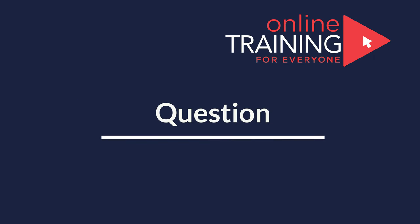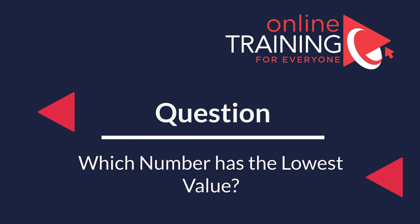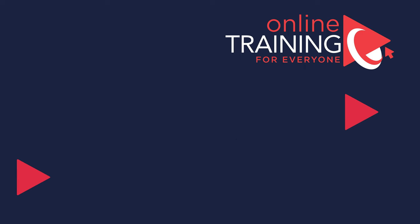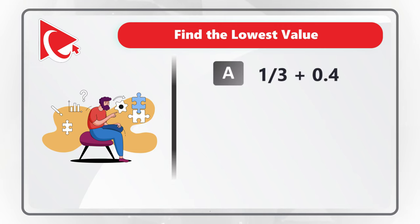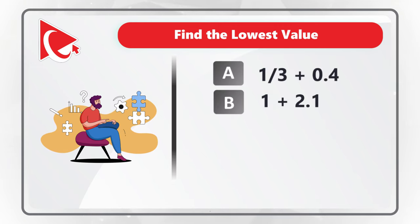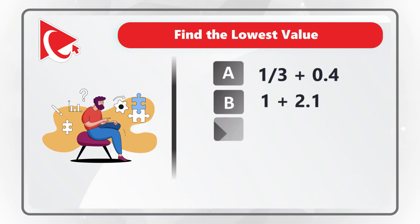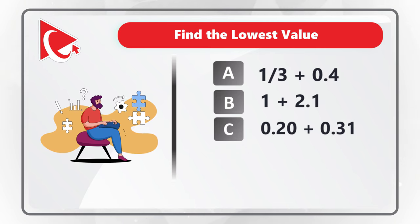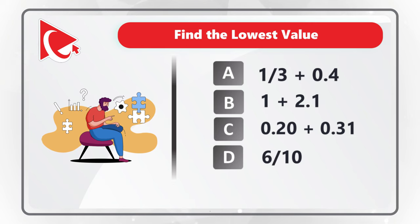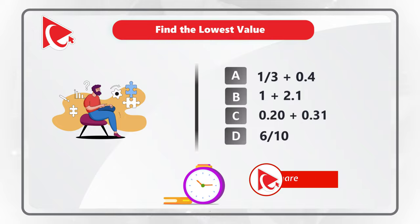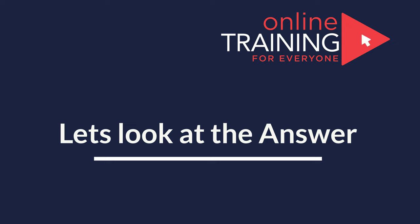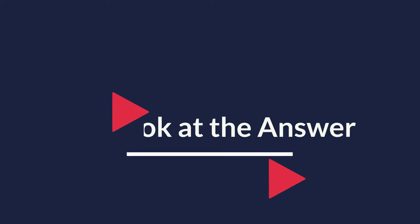I love this question because it truly makes you think to determine the final answer. You need to determine which number has the lowest value. You have four choices: A: one-third plus 0.4; B: 1 plus 2.1; C: 0.2 plus 0.31; D: 6 tenths. The tricky part is that the question is designed to make you do mental math, and you need to simplify all the options to get to the final answer.